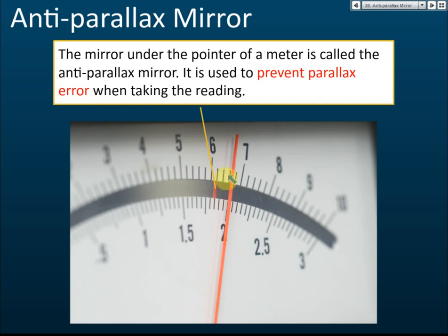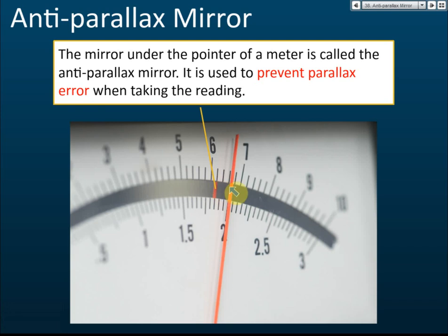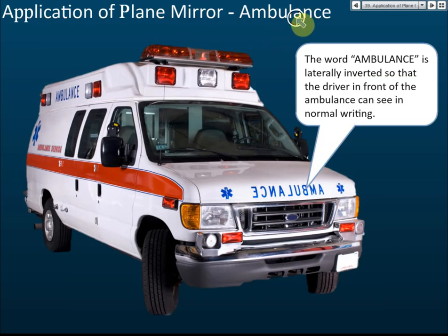If your eye is not at right angles above the pointer, you might read, for example, 6.6 amperes, but you will also see the reflection of the pointer beside it — meaning 6.6 is not accurate due to parallax error. You must move your eye so the pointer blocks its own image, eliminating parallax error. This is the application of a plain mirror as an anti-parallax mirror.